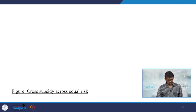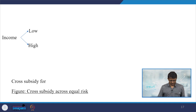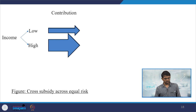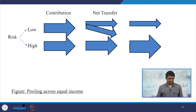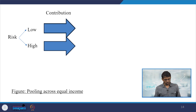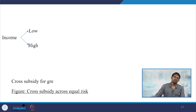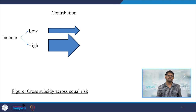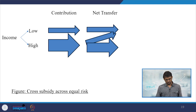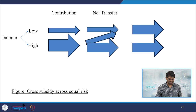In this diagram we explain cross-subsidization or cross-subsidy across equal risk. Cross-subsidy for greater equity works across income: those with high income have their income redistributed through sharing the premium, which is useful for those with low income. The net transfer from high-income individuals is highly useful and helps in redistribution of income and welfare.